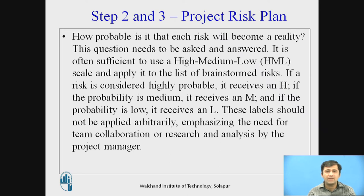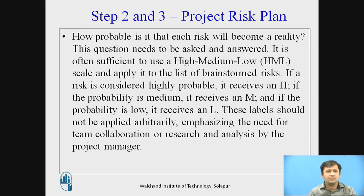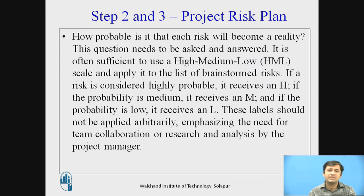In this step, at an initial level, we have to summarize that list by impact. If the risk is considered highly probable, it receives an H. If the probability is medium, it receives M. If the probability is low, it receives L. I am talking about probability of occurrence of that risk — whether it is high, medium, or low. This generally comes with experience, some forecasting, or discussion among the team. These labels should not be applied arbitrarily, emphasizing the need for team collaboration or research analysis by the project manager.